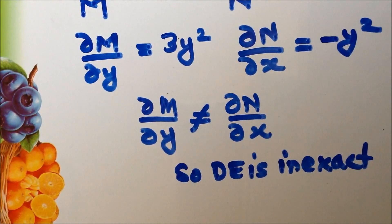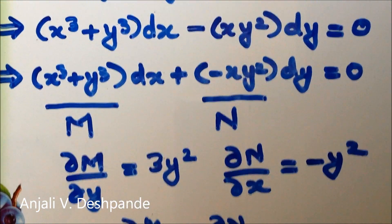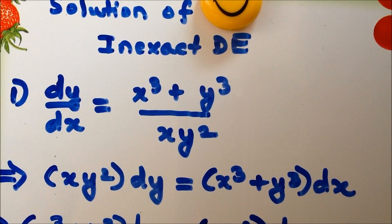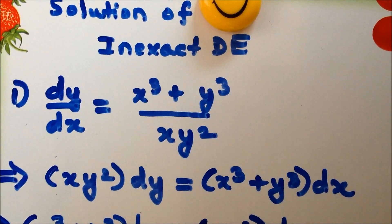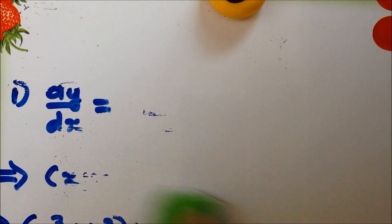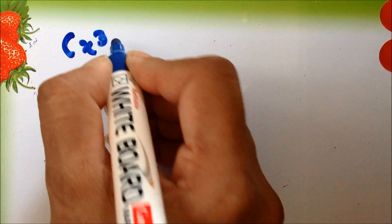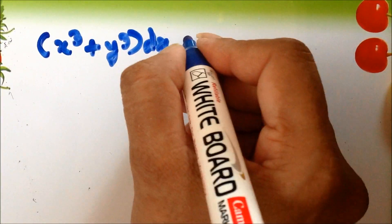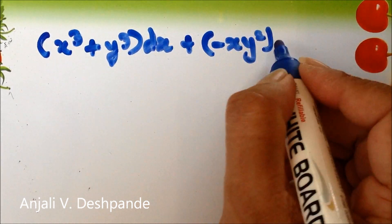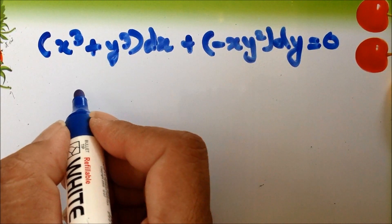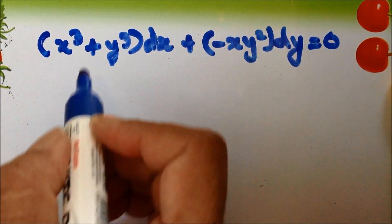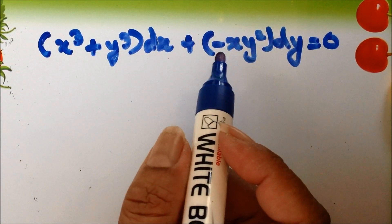Since the equation is inexact, we need to find an integrating factor. We will follow the rules discussed in the earlier video on inexact differential equations (Part 1), the link for which is given in the description box below. The integrating factor will make this equation exact so we can then solve it.